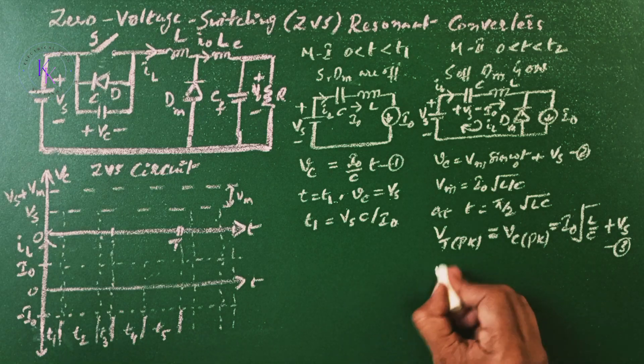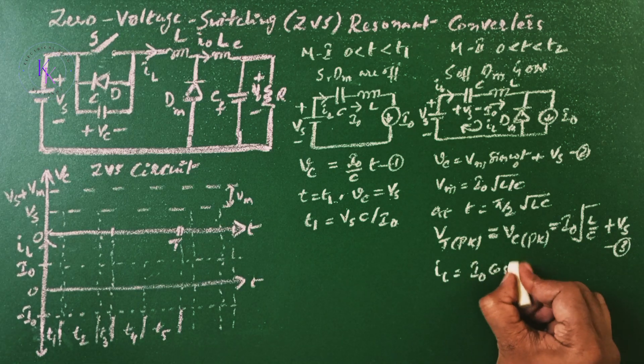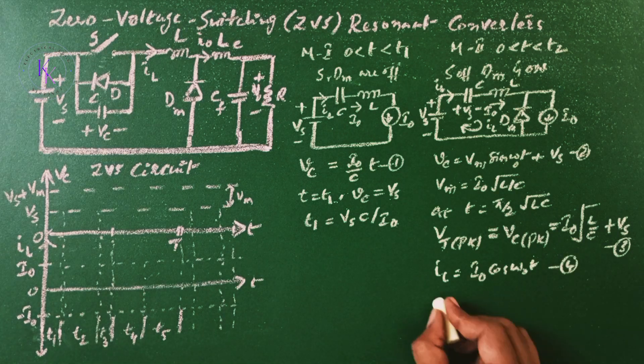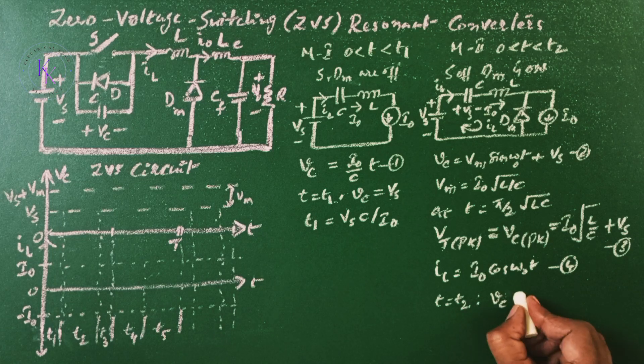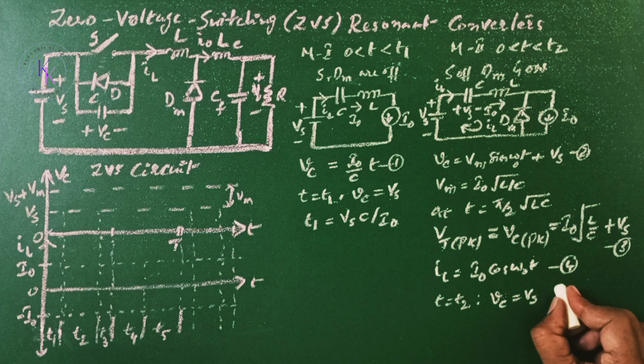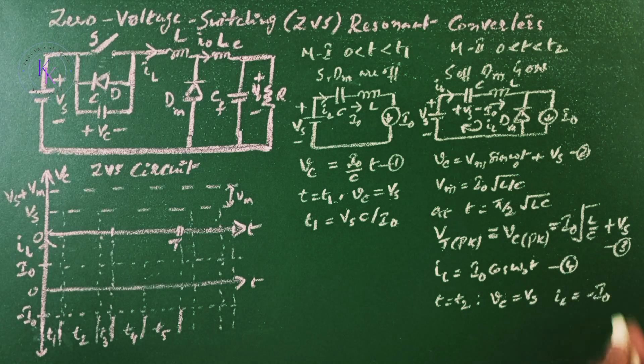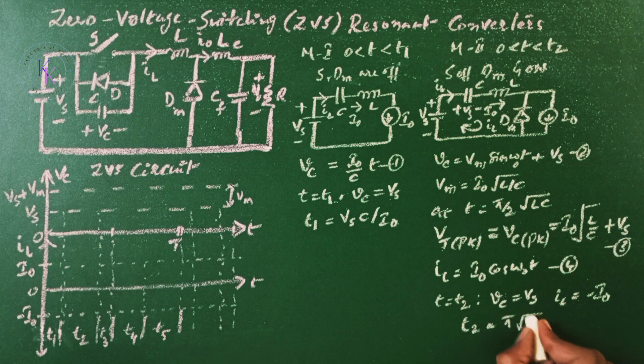Then the inductor current IL is given by I0 cos omega naught T, and this mode is going to end at T equals to T2 where the voltage across the capacitor will be equals to VS and the current IL equals to minus I0. Therefore, T2 is given by pi root LC.